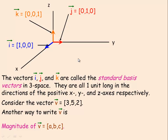Now on the second page, vectors in 3-dimensional space. These vectors are each 1 unit long: in the direction of the positive x axis that's i = (1, 0, 0); in the positive y axis the vector is called j = (0, 1, 0); and the vector that's 1 unit long in the direction of the positive z axis is k = (0, 0, 1). They're called the standard basis vectors in 3-space, because any other 3-dimensional vector can be written in terms of those vectors quite easily.